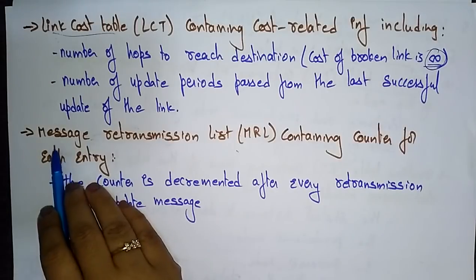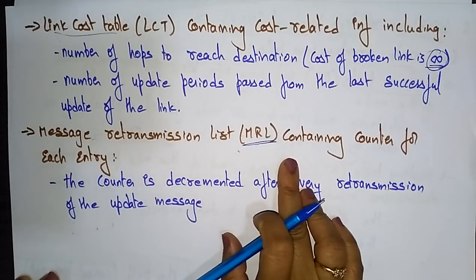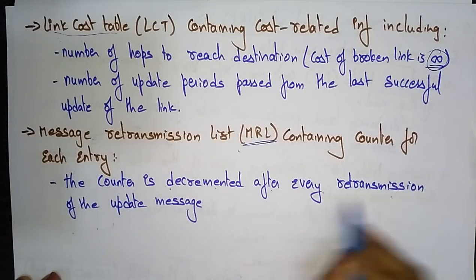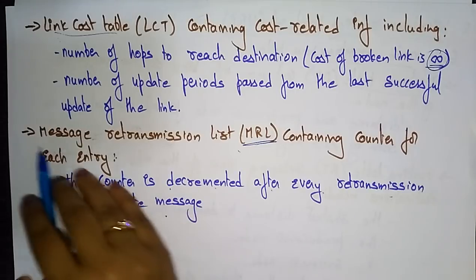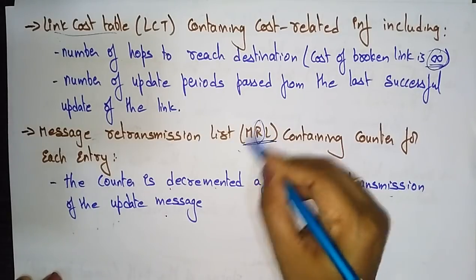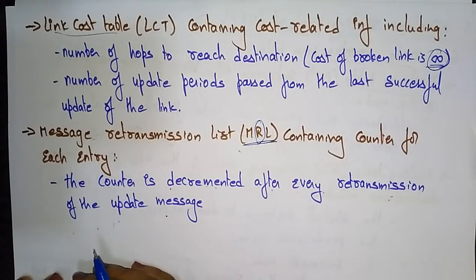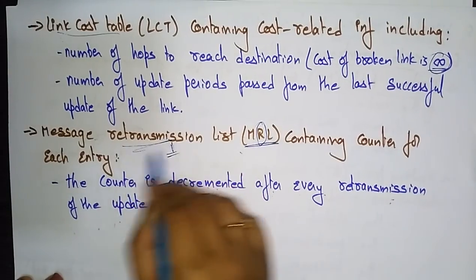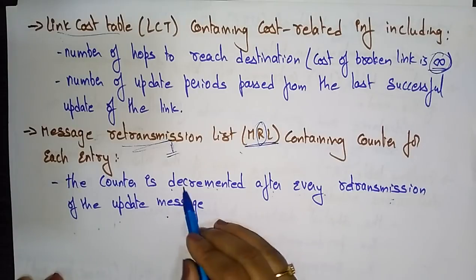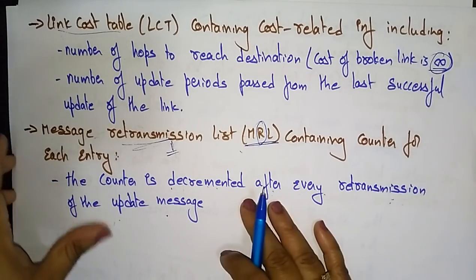The message retransmission list (MRL) contains a counter for each entry. The counter is decremented after every retransmission of an update message. Retransmission occurs whenever a link or path is broken. These are the four main tables present in the Wireless Routing Protocol.